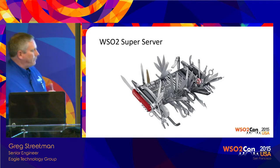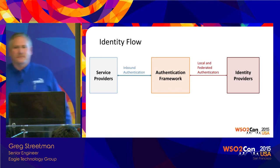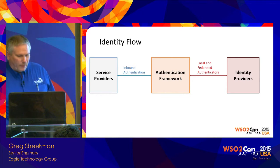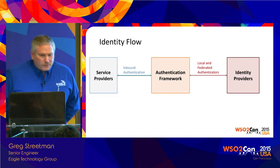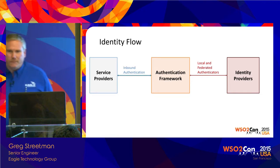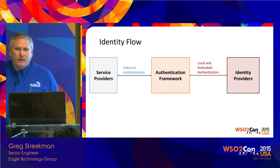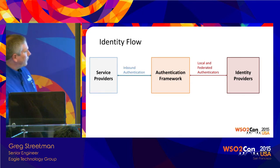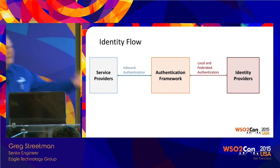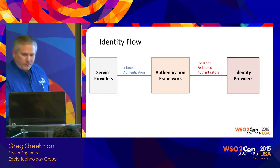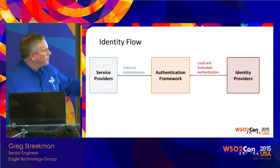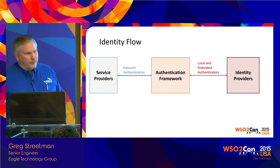Let's talk about how the identity flow happens. You have service providers — anything out there that provides services that need authentication. So these service providers call into the inbound authentication. You have things such as SAML SSO, OAuth, Passive STS — all these inbound authentication methods are available to you. That calls into the authentication framework, which then looks up what identity provider is associated with that service provider, calls that identity provider, and here we call local and federated authenticators. We're plugging in at the local and federated authenticator — the thing that says, are you who you are, and here's the information about you.